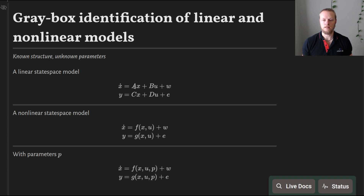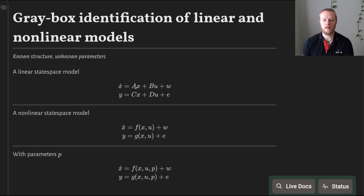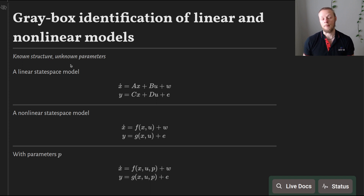We have just said: find us some matrices A, B, C, and D that fit my data, and given that form of the model, the estimation algorithm has been completely free to choose whatever A and B it wants. But very often we know some particular structure of our system equations, but maybe we just have some unknown parameters, so maybe we want to do parameter calibration or parameter fitting.